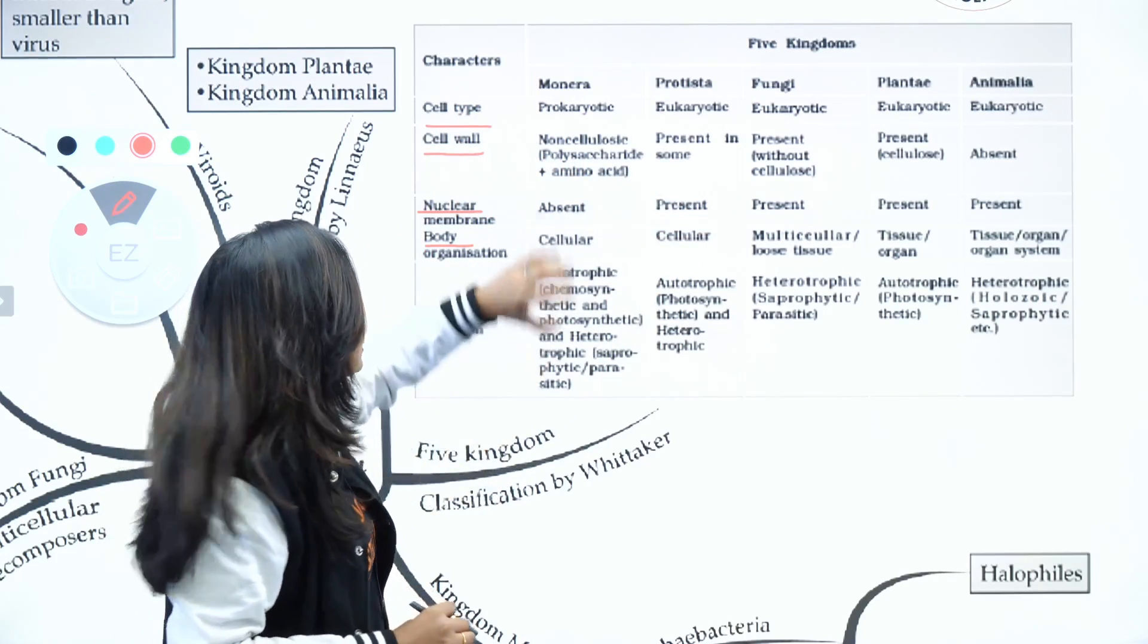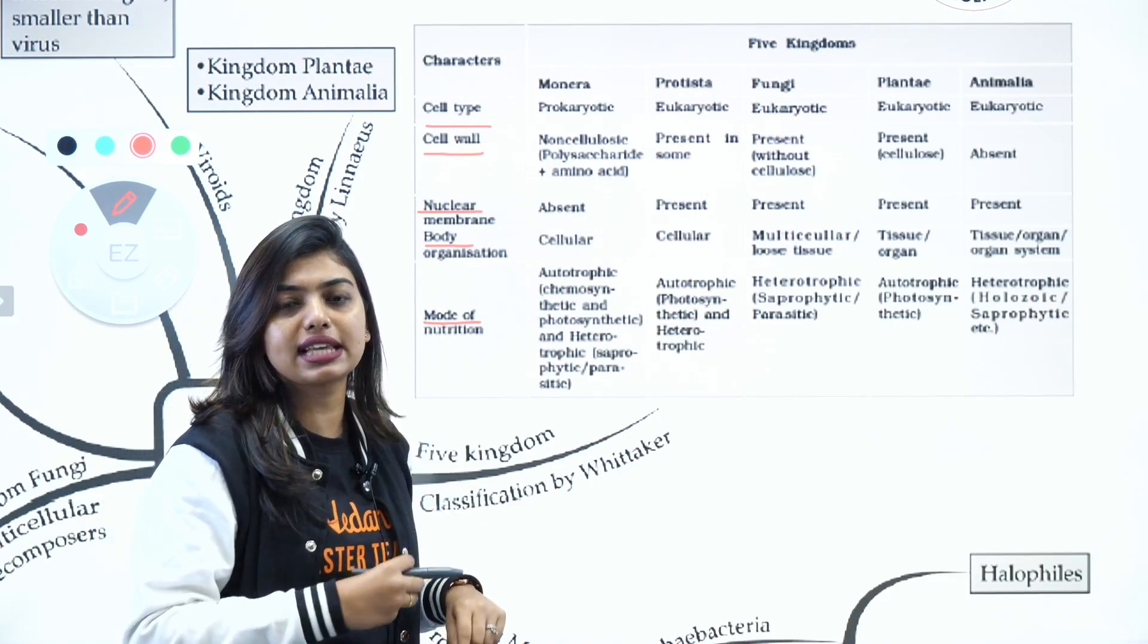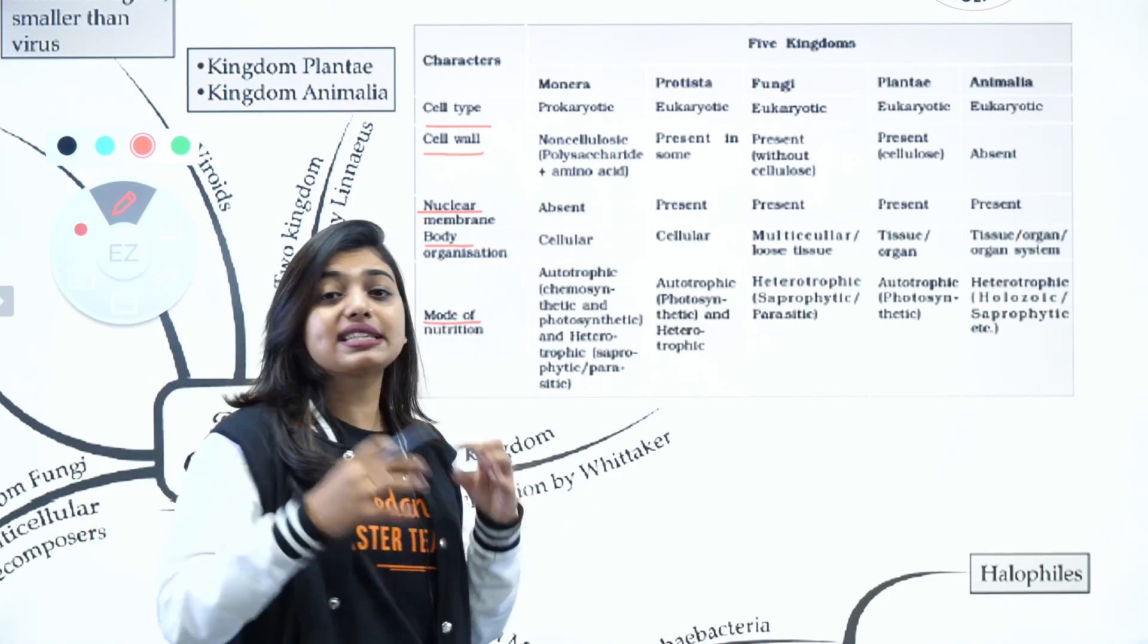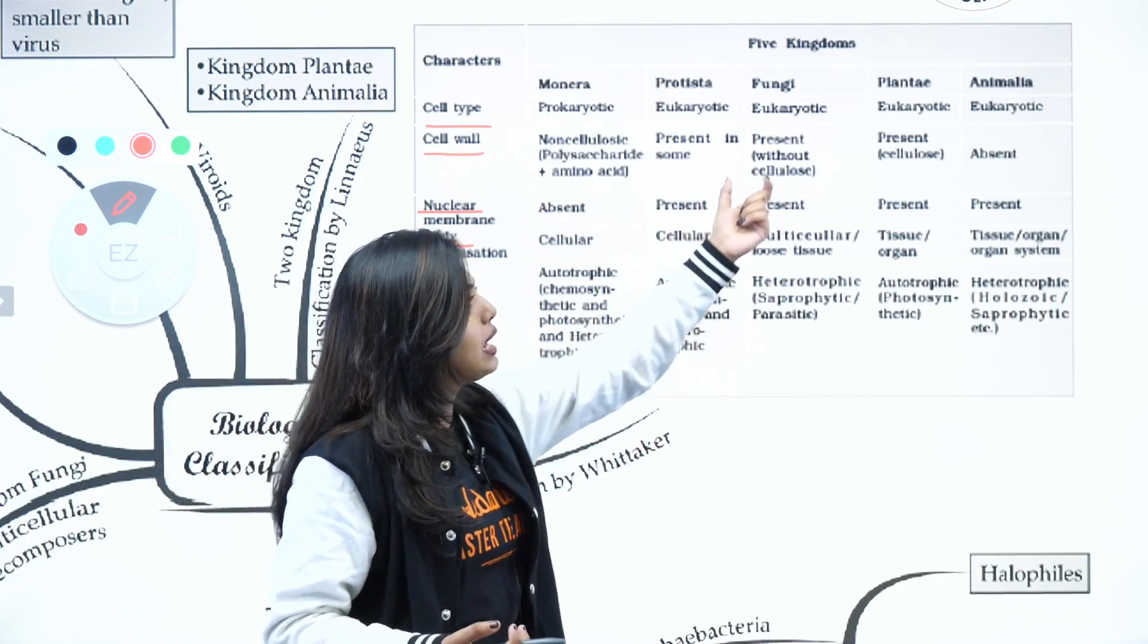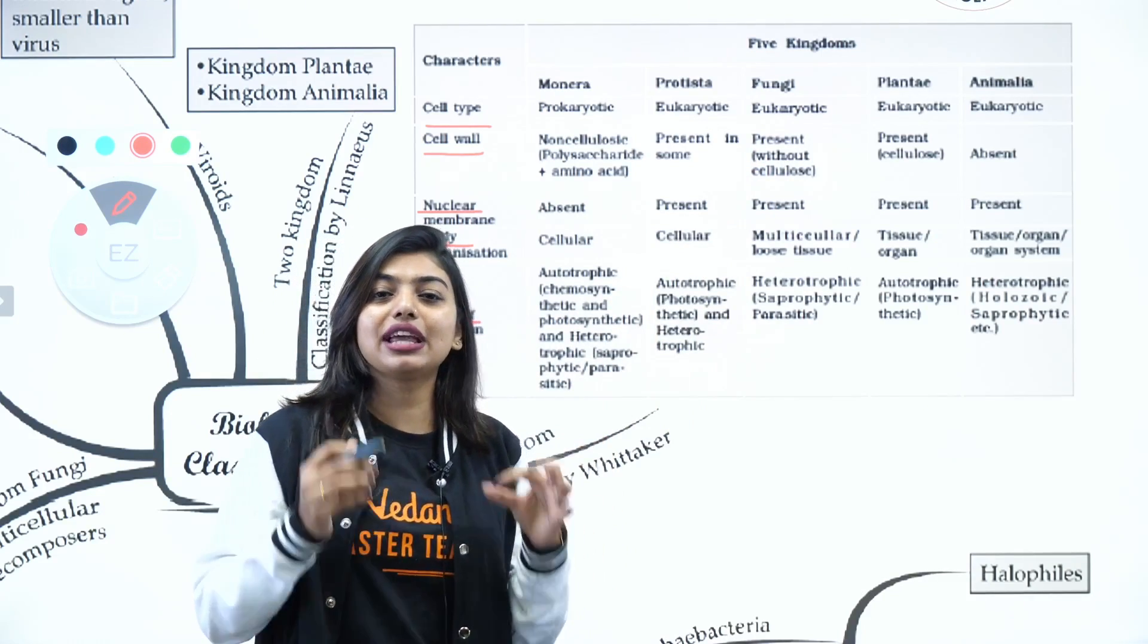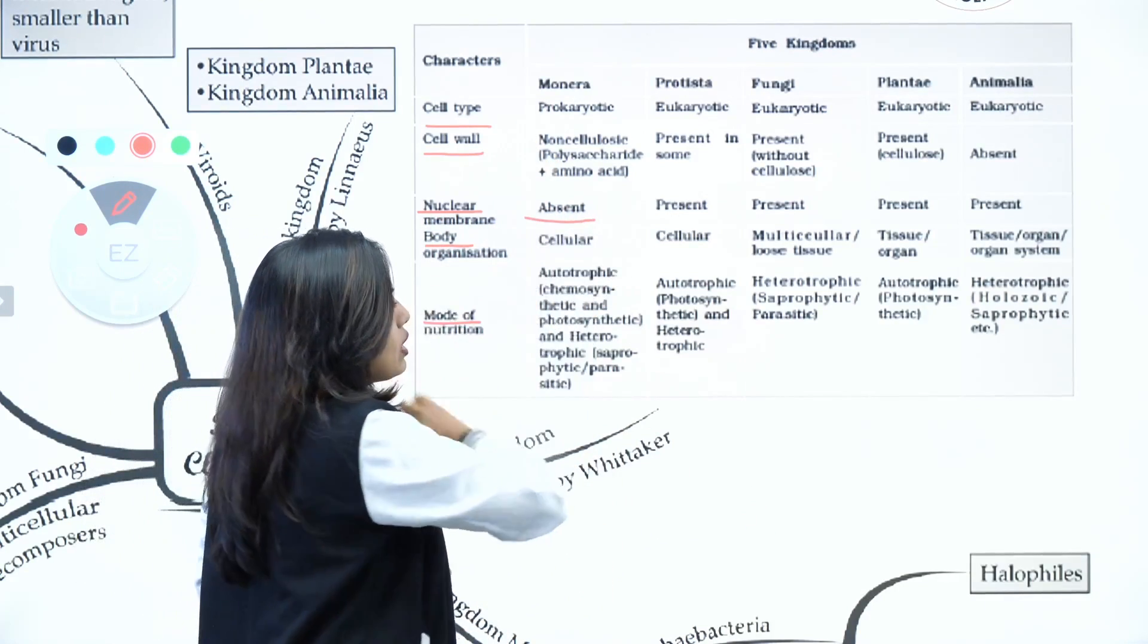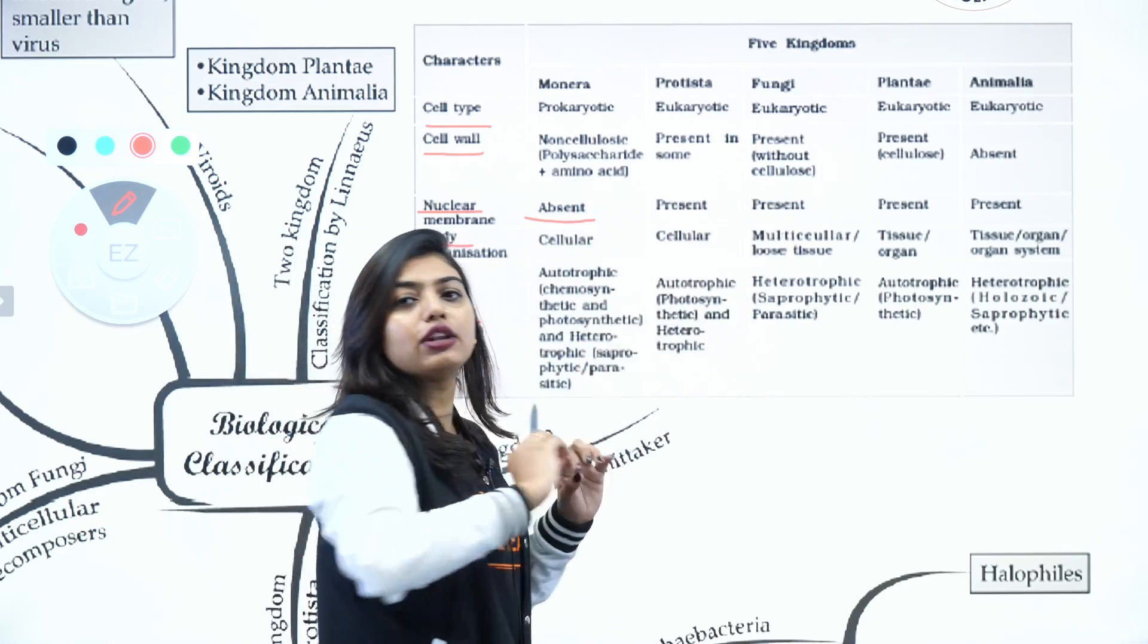If you look here, we have Monera that comes under prokaryotes and the rest all coming under eukaryotes. Then we have the cell wall. Monera have a peptidoglycan cell wall or non-cellulosic cell wall which is made up of polysaccharide and amino acids. Protista - cell wall is present in some and absent in some. Fungi - cell wall is present but it is made up of chitin and not cellulose. Plants made up of cellulose, and animals - no cell wall.